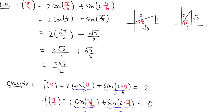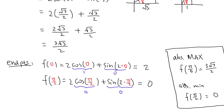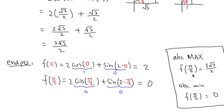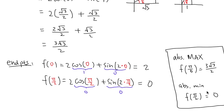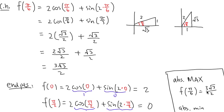We have three values: f(π/6) = 3√3/2, f(0) = 2, and f(π/2) = 0. The absolute maximum is f(π/6) = 3√3/2, which is larger than 2 — you can verify on a calculator. The absolute minimum is f(π/2) = 0, which is the smallest value.